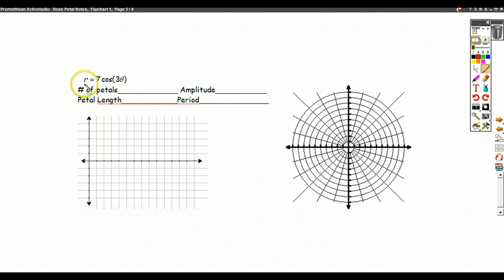So we're graphing r equals 7 cosine 3 theta, and here I want to formalize a little bit more what rose petal graphs always look like in terms of their form. Rose petal graphs will always have the form r equals a cosine b theta, or r equals a sine of b theta.